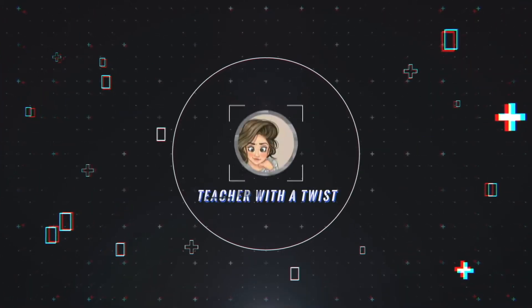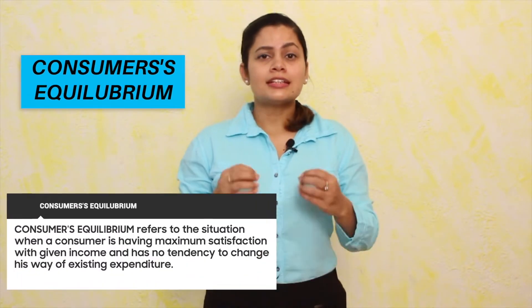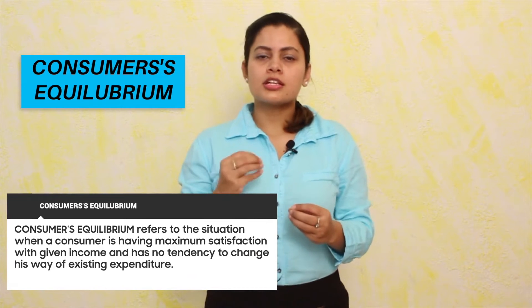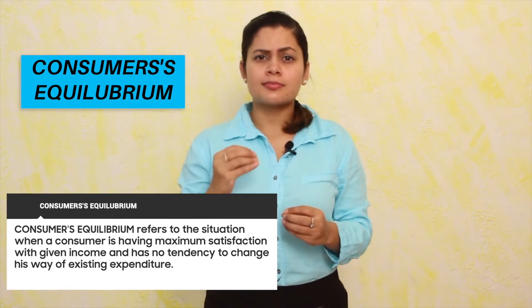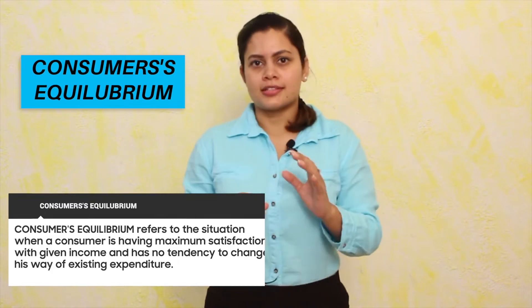To understand the concept of the Law of DMU, we need to understand a few basic concepts. This chapter — Consumer Equilibrium — is based on how a consumer is going to attain equilibrium, that is, maximum satisfaction with a given income and prices.